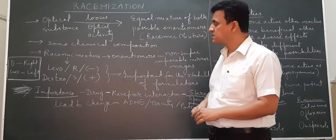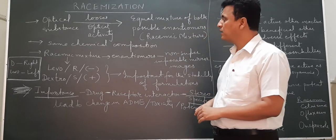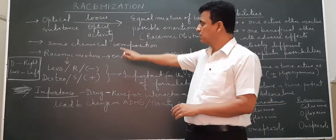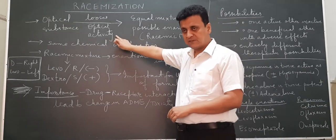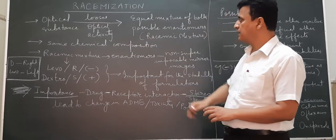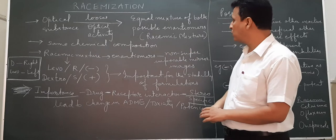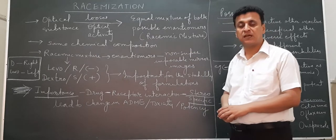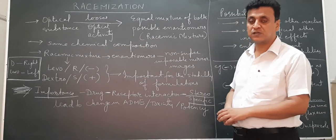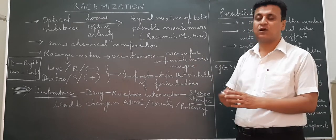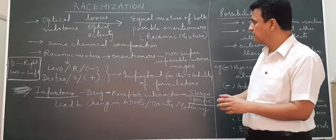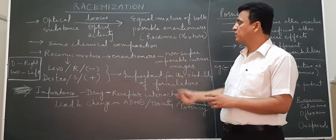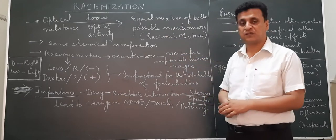What is racemization? When an optical substance loses its optical activity and gets transformed into an equal mixture of both possible enantiomers, the process of this transformation is called racemization and the mixture which is formed is called a racemic mixture.